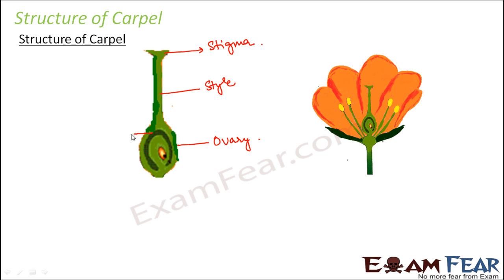Inside the ovary you can see a circular structure which is nothing but the ovule. So inside the ovary, the ovule is present. And even inside the ovule, when you look further, you can see the egg — inside the ovule you will have the egg.